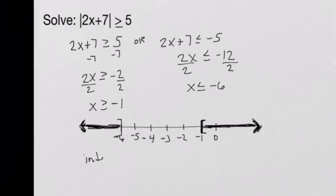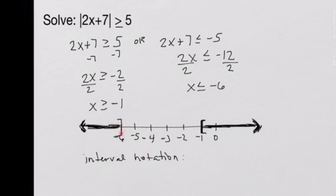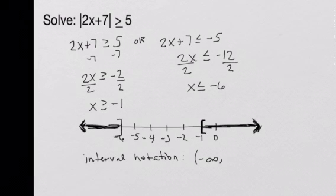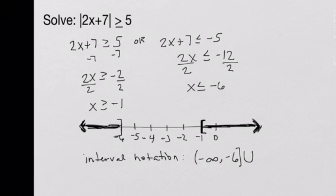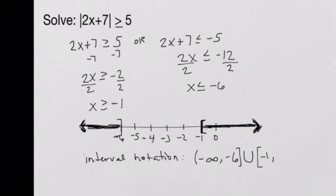We use this graph to write our answer in interval notation. We come from negative infinity and continue to negative 6, including that number because of the or equal to, so we use a bracket: (-∞, -6]. Negative infinity always gets a parentheses because you can only get close to it. We use the union symbol for the gap, then pick up at negative 1 including it with a bracket, continuing to positive infinity: [-1, ∞). Positive infinity always gets a parentheses.